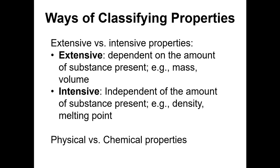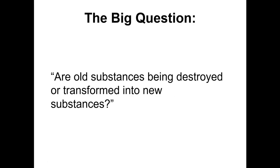We're going to focus on physical properties versus chemical properties, and then physical changes versus chemical changes. When deciding which category something falls into, ask what I call the big question: are old substances being destroyed or transformed into new substances, or is a substance retaining its identity? If substances are being transformed, that indicates a chemical property or process; if identity is not changing, that's a physical process or property.